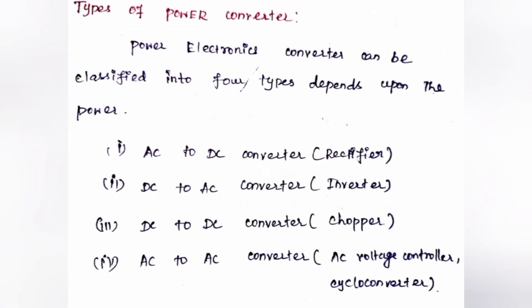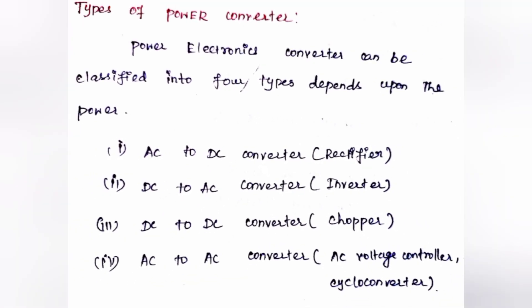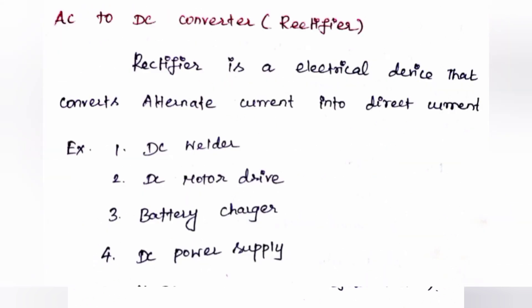First, AC to DC converter, that is called rectifier. Second, DC to AC converter, that is called inverter. Third, DC to DC converter, that is called chopper. And fourth, AC to AC converter, that is called AC voltage controller and cycloconverter.